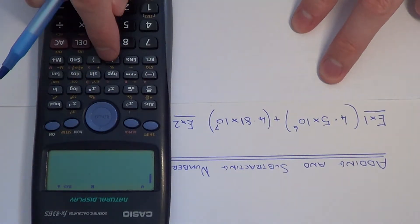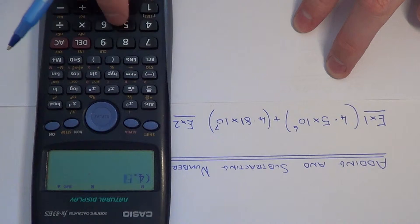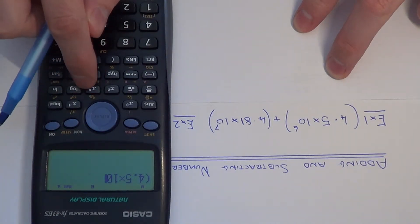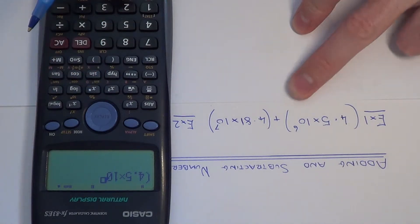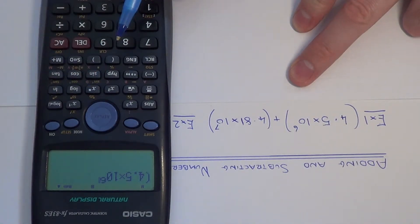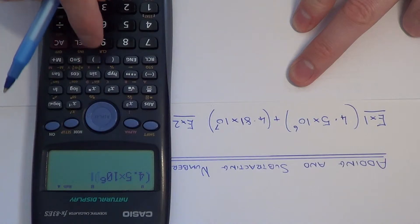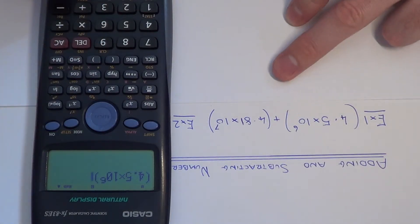So if we type the first number in as 4.5 times 10, the power key is this one, so hit that and we just need to type the 6 in the box and put the bracket on the same line. So that's our first number in.